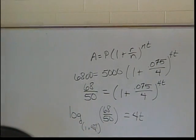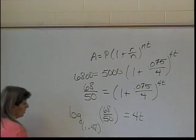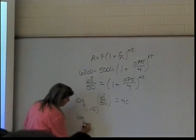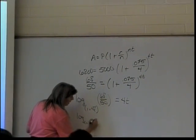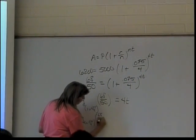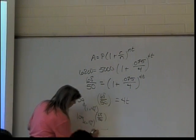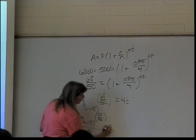And then last but not least, it's not really last but it's close to last, divide by 4. So I'll have log base 1 plus 0.075 over 4 of 68 over 50. All of that's divided by 4 is equal to T.